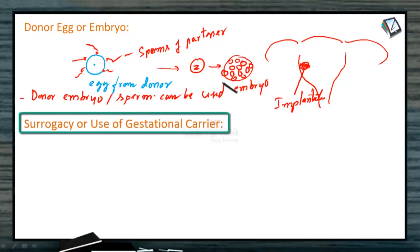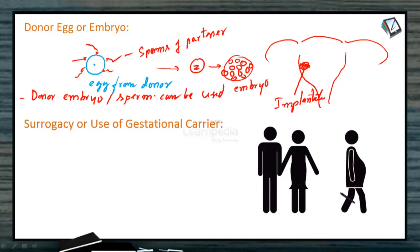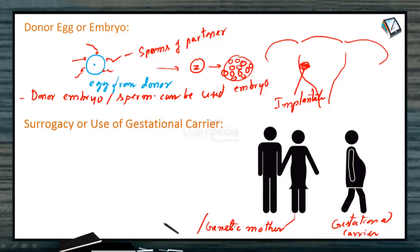The final method is surrogacy, or the use of a gestational carrier. In this case, a woman carries a donor embryo so that it can complete its development. The characteristics of the newborn are related to the genetic or biological mother, not the surrogate. The embryo formed after normal fertilization is transferred to the gestational mother for further development, and she implants the embryo and gives birth — but the characteristics of the newborn are related to the biological father and mother. This method is called surrogacy.